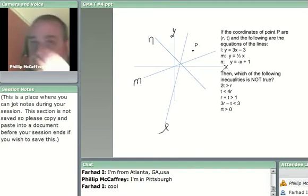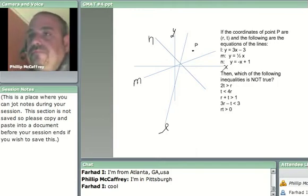Which of the following inequalities is not true? We have five answer choices and we have to eliminate them. I always like to start by eliminating some obvious ones. Do you see any obviously wrong answers?